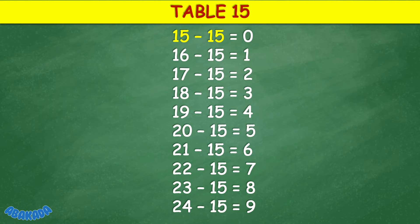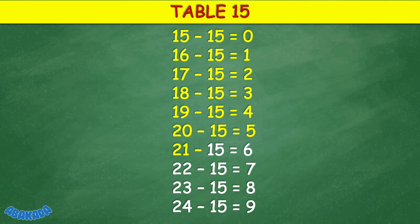Table 15: 15 minus 15 equals 0, 16 minus 15 equals 1, 17 minus 15 equals 2, 18 minus 15 equals 3, 19 minus 15 equals 4, 20 minus 15 equals 5, 23 minus 15 equals 8, 24 minus 15 equals 9.